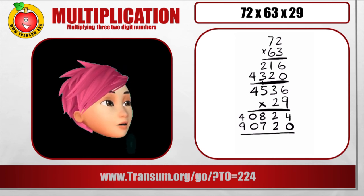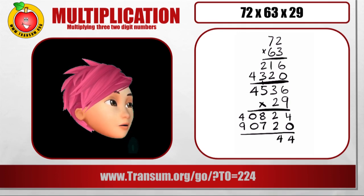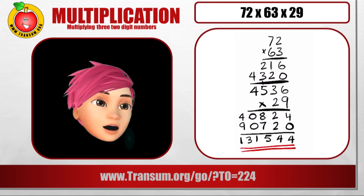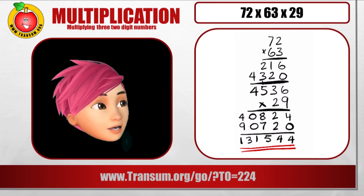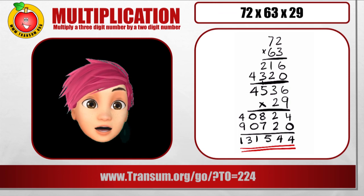We add from the units, the ones column. The 4 and the 0 makes 4. The 2 and the 2 makes another 4. The 8 and the 7 makes a 15. The 5 down. Carry the 1 to the next column. And then finally the 9 and the 4 make 13. So we have our final answer for the final calculation. It's 131,544.